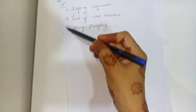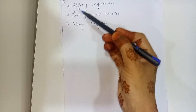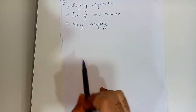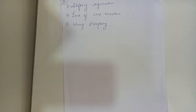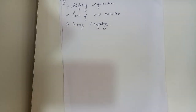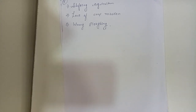In this there are three types of methods: shifting agriculture, lack of crop rotation, and wrong plowing. Shifting agriculture is the practice in which plots of land are cultivated temporarily, then abandoned and allowed to revert to their natural vegetation while the cultivator moves on to another plot. When the nutrients of the soil become less and fertility decreases, people move from one place to another place. This is called shifting agriculture.